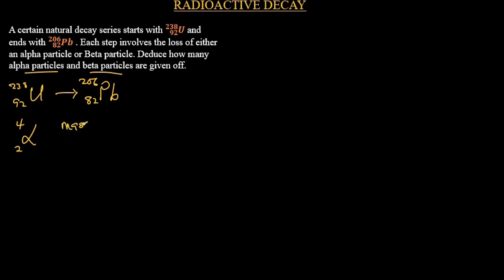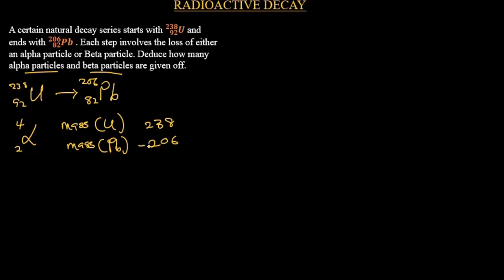So for the mass number, uranium is 238 and lead is 206. We need to find the difference — how much change in mass number the alpha particles will account for. We subtract 206 from 238 and we get 32. So we have a difference in mass number of 32.